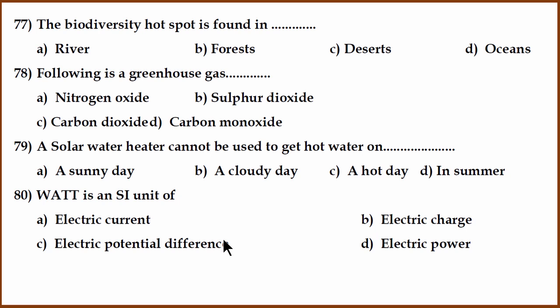77th question biodiversity hotspot is forest, because it has all kinds of biodiversity. The greenhouse gas - carbon dioxide is the main greenhouse gas. When can solar heater not be used to get hot water? On a cloudy day.